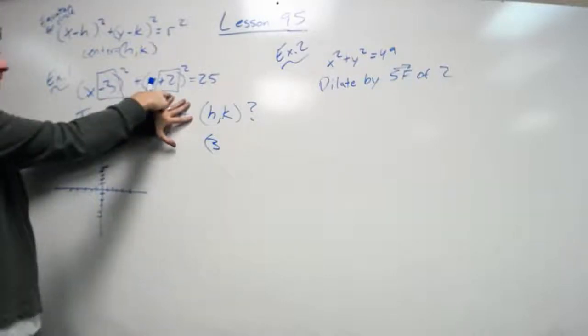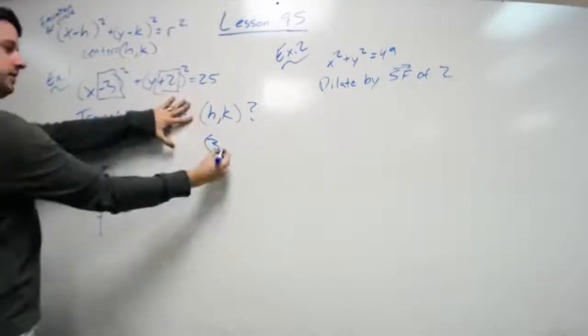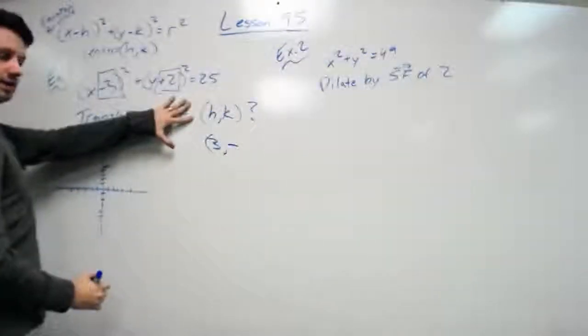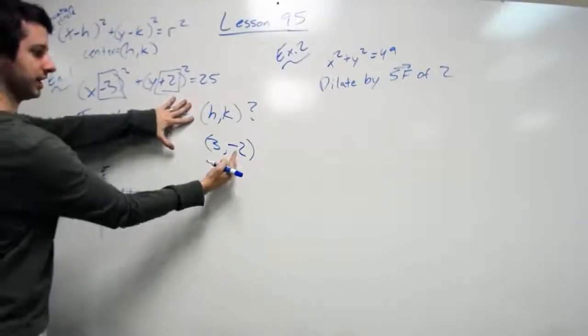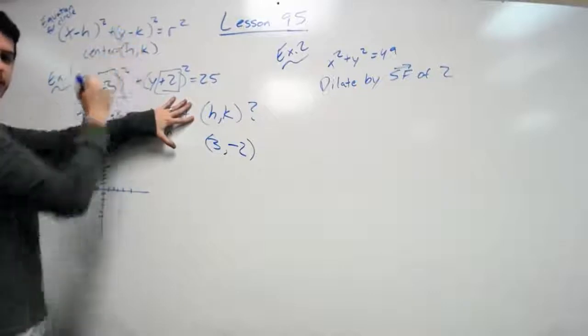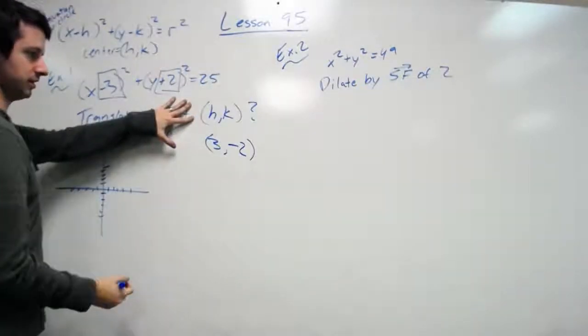Now notice my k is a positive two. So the only way for that to be positive is if this was a negative at the center. So it is a negative two, because if I plugged in a negative two to k, it would be a double negative, making it a positive. So my center of this circle is three negative two.